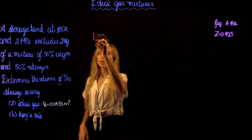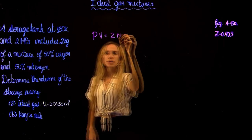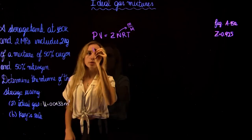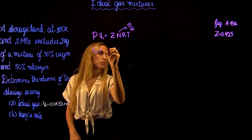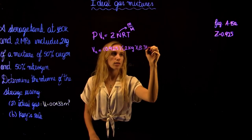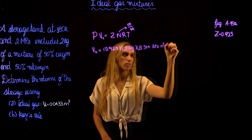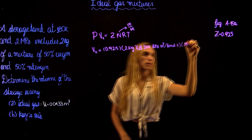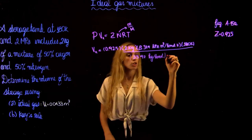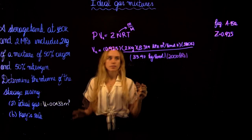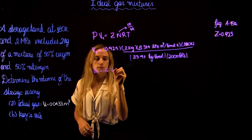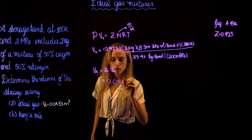The Kay's rules equation is very similar to the ideal gas one: PV = Z × (m / M) × Ru × T. So the volume from Kay's rules equals Z times the ideal volume. Using Z = 0.925, m = 2 kg, Ru = 8.314 kPa·m³/(kmol·K), T = 180 K, M = 33.97 kg/kmol, and P = 2,000 kPa, we find the Kay's rules volume equals 0.925 times 0.044, which gives approximately 0.0407 meters cubed.